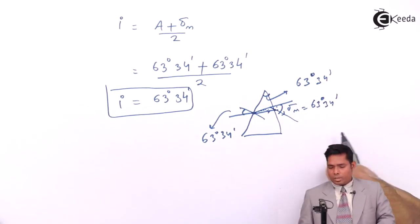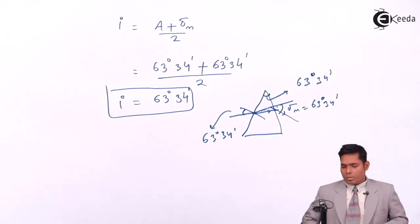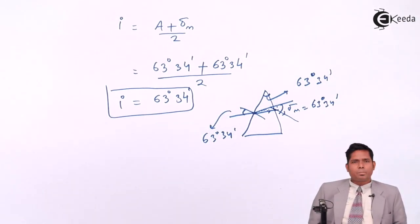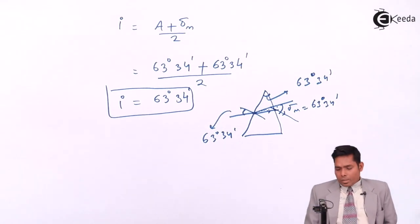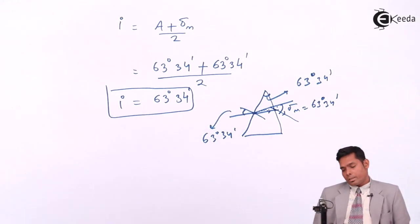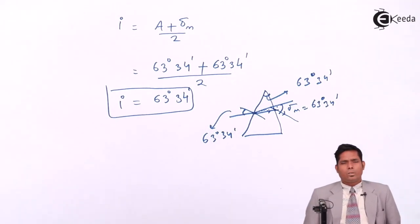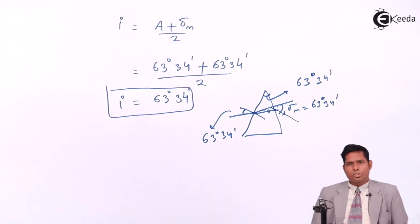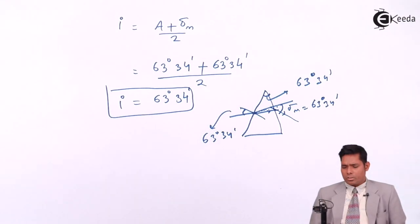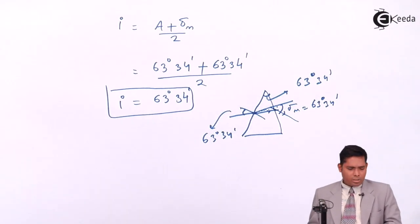This is the case when all are the same. That means if I take a prism of angle 63 degrees 34 minutes, and to this prism I allow a ray of light at an angle of incidence of 63 degrees 34 minutes, then the angle of minimum deviation will be 63 degrees 34 minutes.